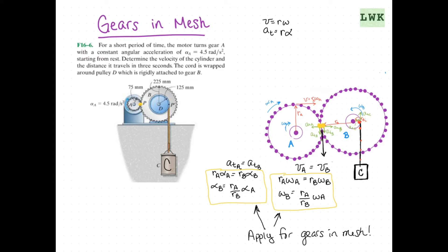For a short period of time, the motor turns gear A with a constant angular acceleration of alpha A equals 4.5 radians per second squared, starting from rest. Determine the velocity of the cylinder and the distance it travels in three seconds. The cord is wrapped around pulley D, which is rigidly attached to gear B.